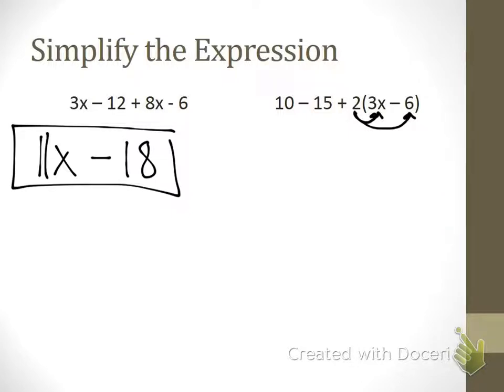Go ahead and try that one. Yeah, so two times three x is six x. So we bring down our numbers plus six x, and what's two times negative six? Negative twelve. All right, now is there anything in here that I can combine together? Ten and fifteen.